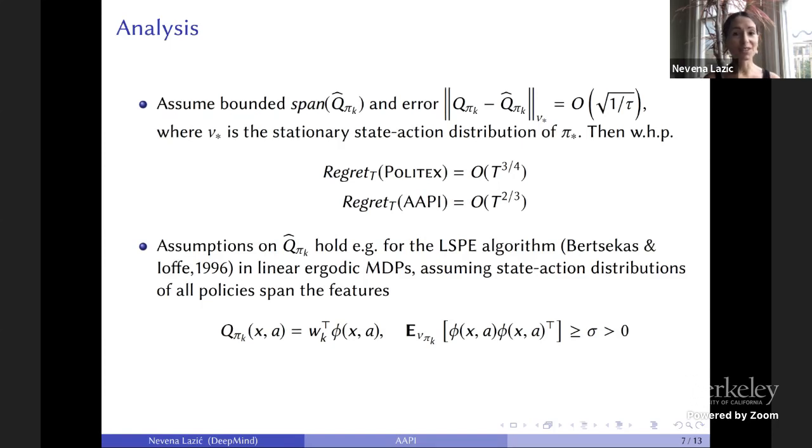You might wonder when does this assumption on Q function error hold? We can show it holds at least in some cases. For example, in linear ergodic MDPs where all Q functions are linear in some known features, if we also assume all policies produced by the algorithm span the feature space, so no policy lives in a subspace of the features, and we estimate using the LSTD algorithm, then this error assumption holds. But effectively, these assumptions on ergodicity and feature excitation circumvent the need to explore. In more general environments which are less stochastic, one would need to do exploration to get good estimates of each Q function.